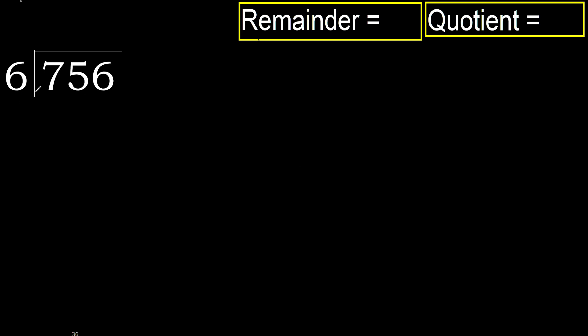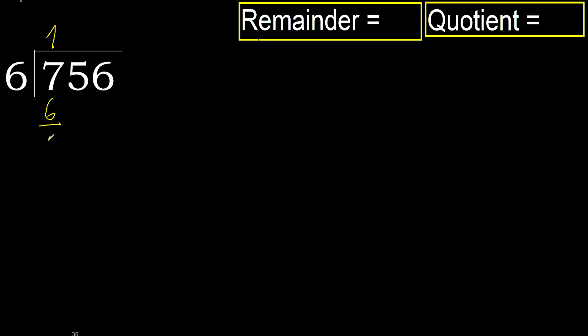756 divided by 6. 7 is not less, therefore start with 7. 6 multiplied by which number is nearest to 7 but not greater? 6 multiplied by 2 is 12, which is greater. Multiply by 1: 6 is not greater, ok. Subtract: 7 minus 6 is 1.